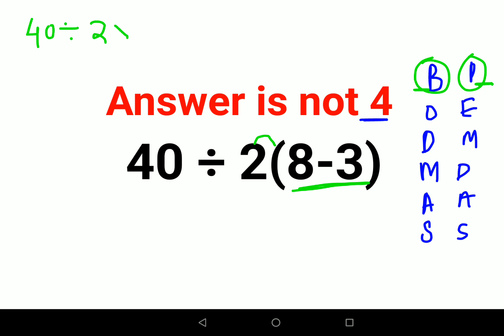And then you will do the parentheses which is what, 8 minus 3, which is 5. Okay, please understand here, a lot of people made the mistake of doing this: 40 divided by, and then they took all of them into a bracket and they made it 10 because 2 into 5 is 10.